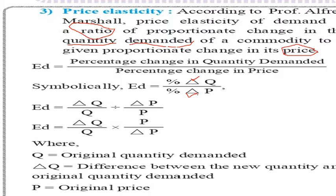So elasticity of demand equals delta Q upon Q divided by delta P upon P. This delta or triangle shows the change in price or change in quantity demanded. This simplifies to: delta Q upon Q multiplied by original price P, divided by delta P — that is, change in price. In this formula, Q is the original quantity demanded.